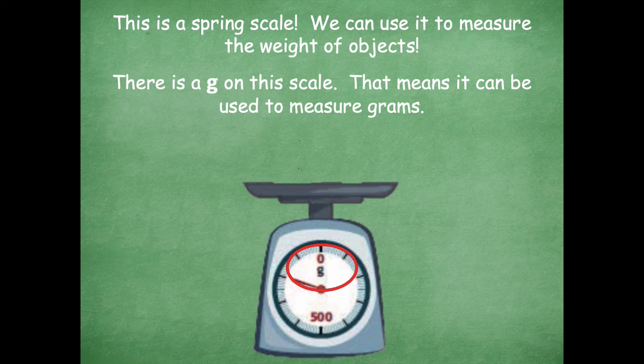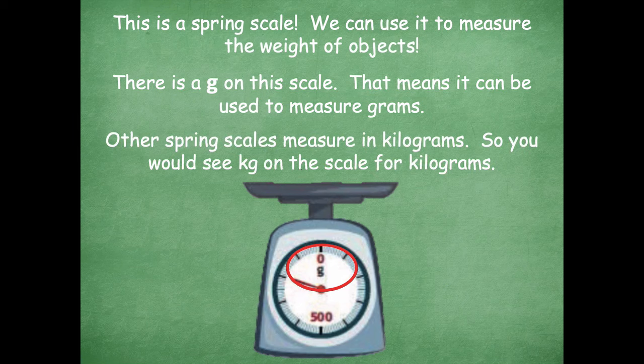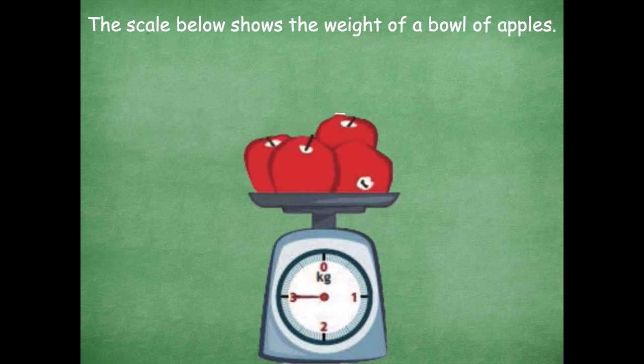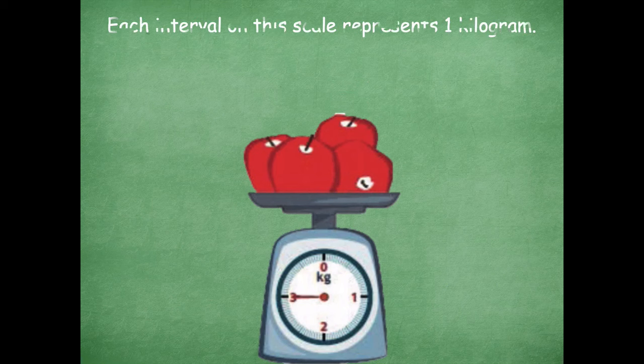What would it have to be labeled with if we're measuring kilograms? Do you guys remember? KG for kilograms. Other spring scales measure in kilograms, so you would see KG on the scale. The scale below shows the weight of a bowl of apples. Each interval on this scale represents one kilogram. When they say an interval, they're talking about going from that dark black line of zero to the next black line of one. That's an interval.